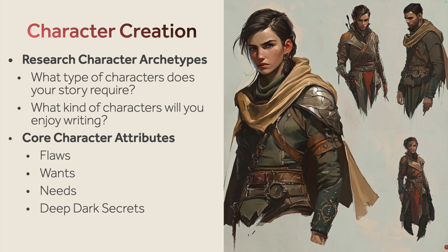Another thing we can take into mind is the core attributes of our characters. This is where I explore their flaws, their wants, their needs — all the traits that will eventually inform their motivations and the conflicts throughout the story. Now, delving into your character's deep, dark secrets creates a layer of depth, allowing them a complex and relatable backstory. A great way to keep some of this stuff together is utilizing collections and keywords to group similar ideas together. We're not really here to nail down specifics — brainstorming is like, let's just throw out some ideas. What are some flaws I'd be interested in exploring? It could be wants I personally relate to or wants I can't connect with but want to understand — I want to understand the human experience. And so that leads to research, that leads to ideas, and we start building connections.